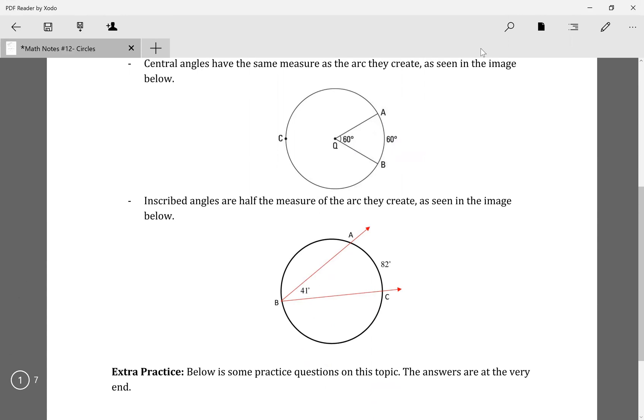And if you had an inscribed angle, which is where it's on the other end of the circle, then whatever this angle is, double that would be the measure of this arc. So like if here it's 41 degrees, it'd be 82 degrees.